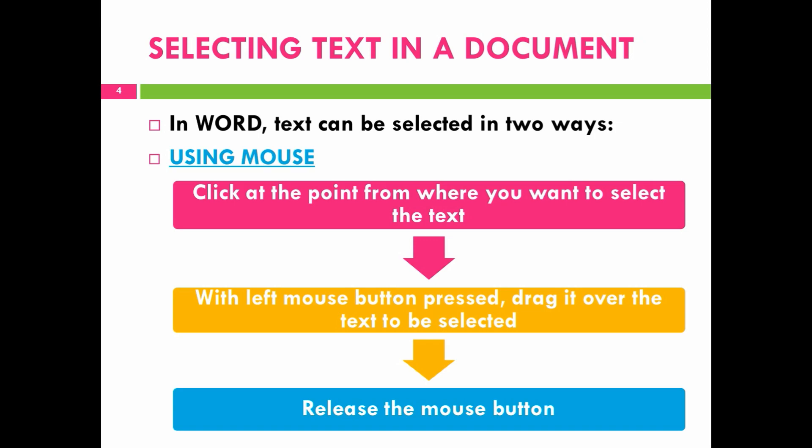Next is selecting text in a document. In Word, text can be selected in two ways: first is using mouse and second is using keyboard. The steps to select text using mouse are: click at the point from where you want to select the text, then with the left mouse button pressed, drag it over the text to be selected, and at last release the mouse button.